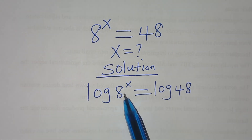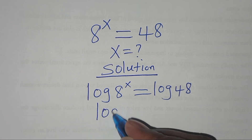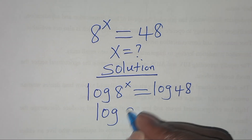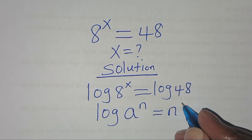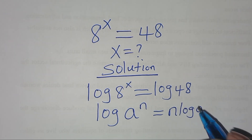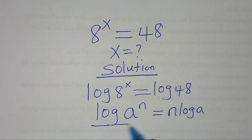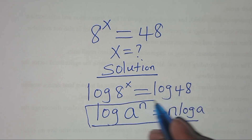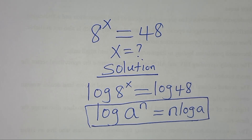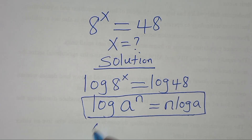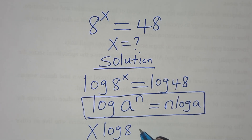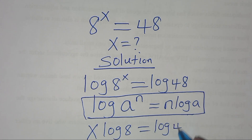Now, ln(8^x) is in the form of ln(a^n), which we can express as n·ln(a). Applying this power property of logarithm, then ln(8^x) can be expressed as x·ln(8), and this is equal to ln(48).